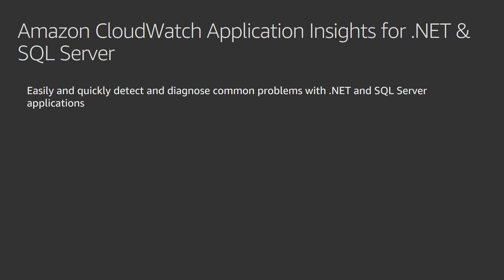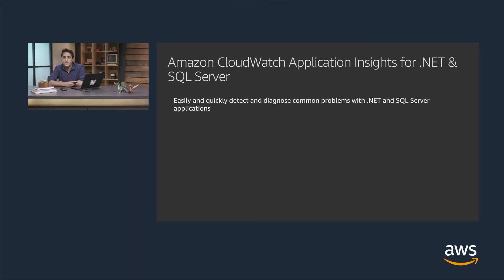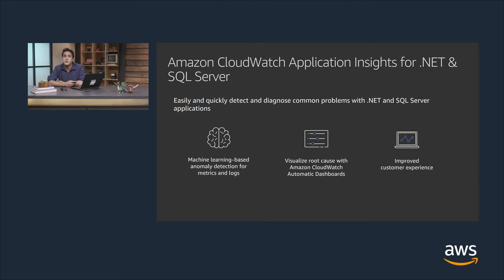Next, let's talk about Amazon CloudWatch Application Insights for .NET and SQL Server. Customers told us that troubleshooting tiered applications is difficult because they have to look through logs and metrics for different tiers and correlate between them to find the root cause. CloudWatch Application Insights simplifies these tasks by detecting anomalies using machine learning, visualizing the root cause in CloudWatch dashboards, and significantly reducing time to resolution.